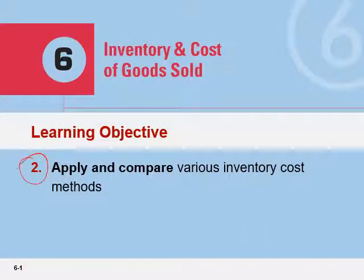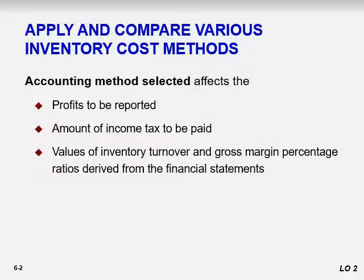Let's talk about applying and comparing various inventory cost methods. Inventory is the first asset for which a manager can decide which accounting method to use. The method selected affects the profit to be reported, the amount of tax to be paid, and the values of inventory turnover and gross margin percentage ratios, which help determine the financial health of a company.